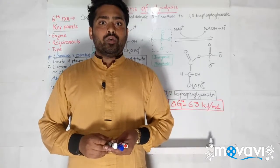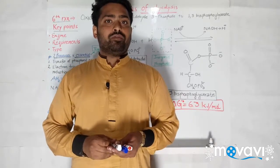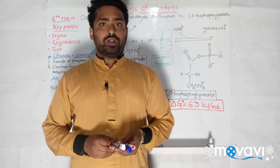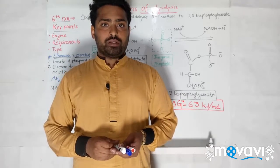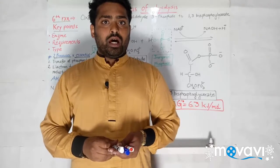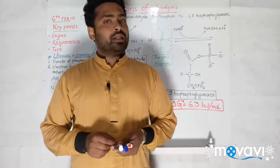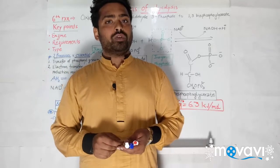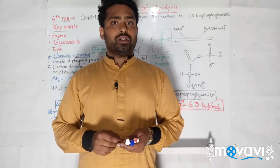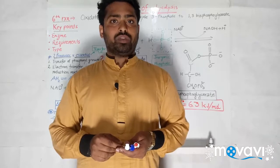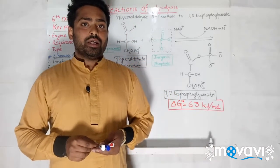We have finished the preparatory or investment phase of glycolysis. Now we are going to discuss the payoff phase of glycolysis. This phase also constitutes five reactions, and in this video we are going to discuss the first two reactions of this phase — the sixth and the seventh reaction.